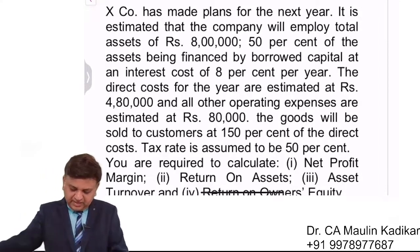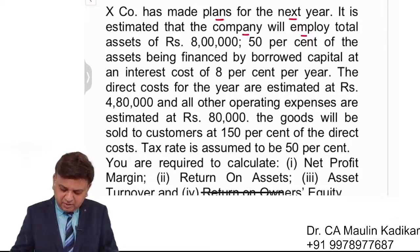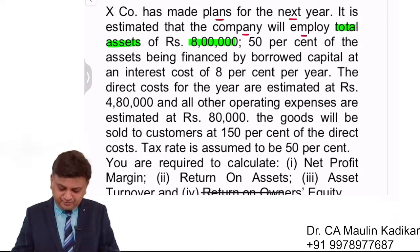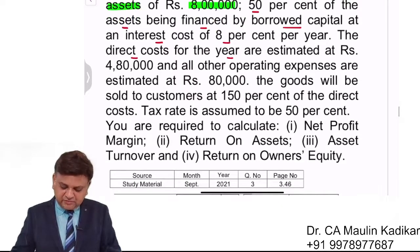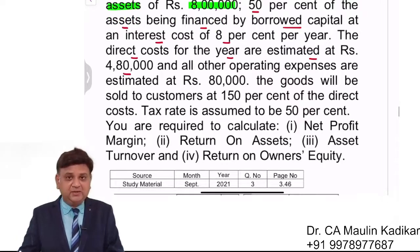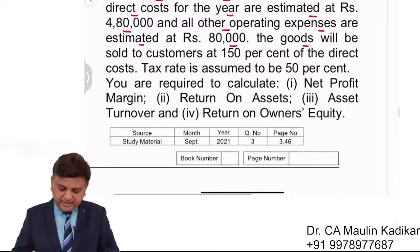X company has made a plan for the next year. It is estimated that the company will employ total assets of Rs 8 lakhs, 50% of the assets being financed by borrowed capital at an interest cost of 8% per year. The direct costs for the year are estimated at Rs 4 lakhs 80,000 and all other operating expenses are estimated at Rs 80,000. The goods would be sold to customers at 150% of the direct cost.